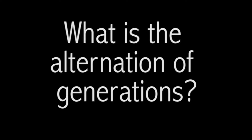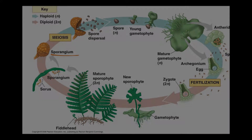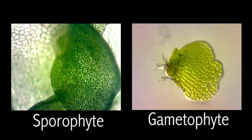What is the alternation of generations? The alternation of generations occurs in plants. It is a process by which the sea ferns alternate between haploid and diploid every other generation. The haploid generation produces gametes, known as gametophytes, while the diploid generation produces spores, known as sporophytes. Throughout the life of the sea fern, these two states will alternate, with the sporophytes taking up the majority of the plant's life.